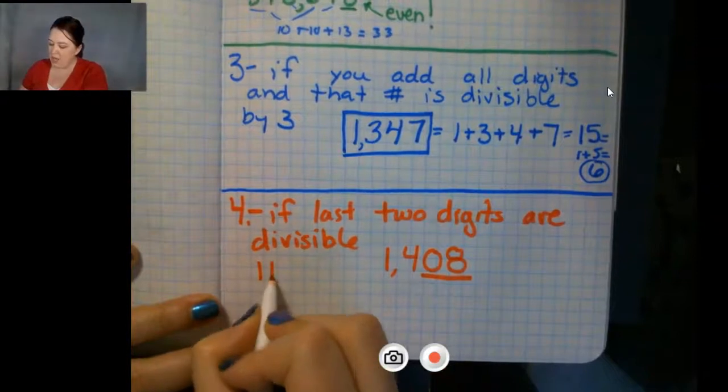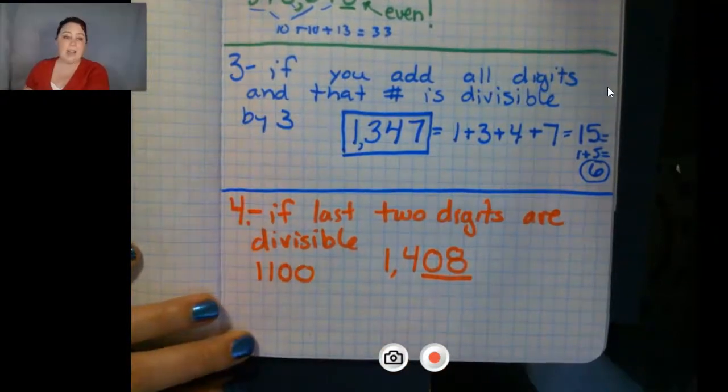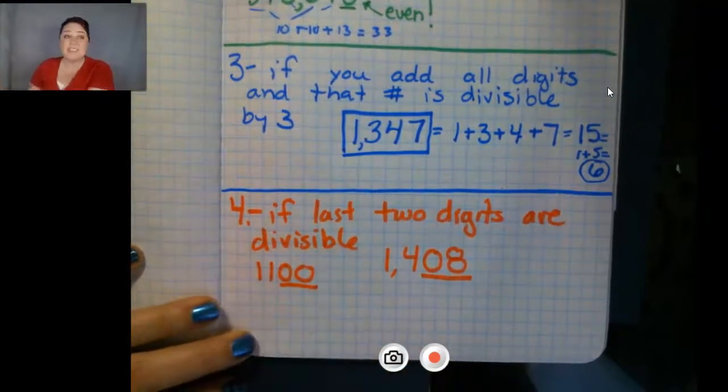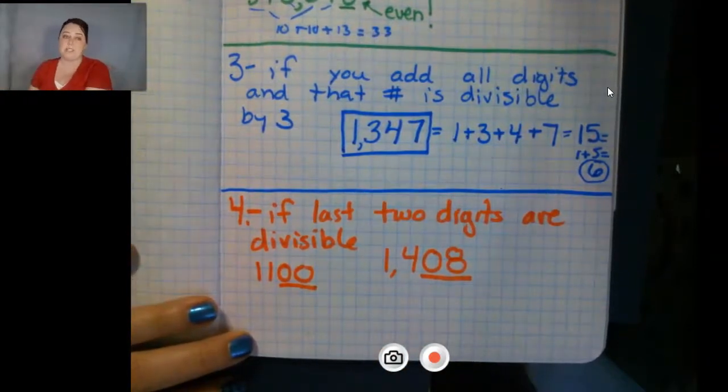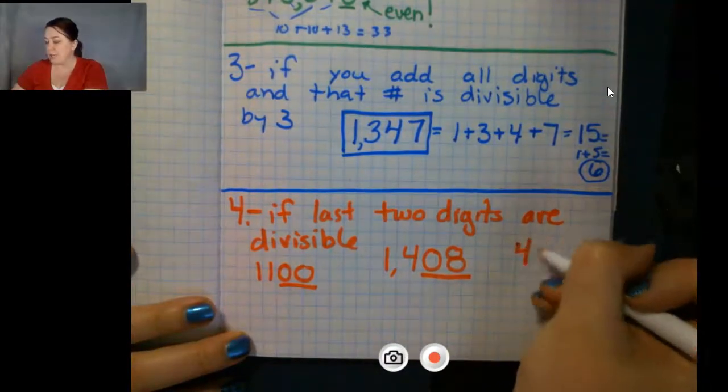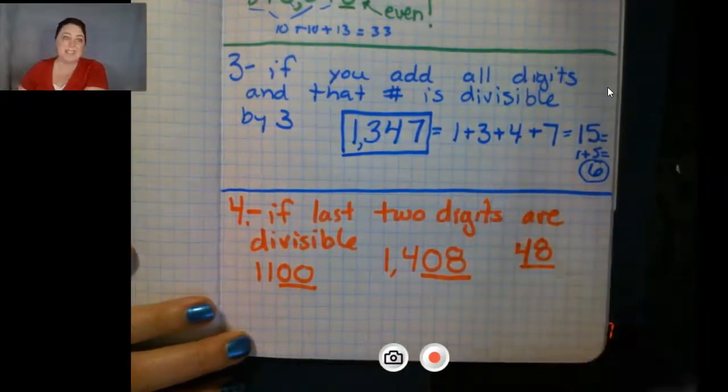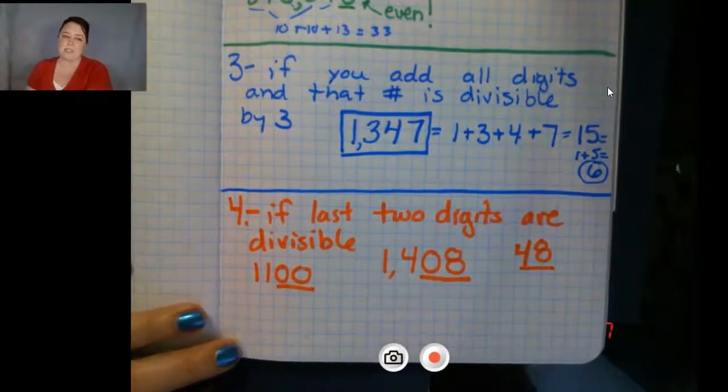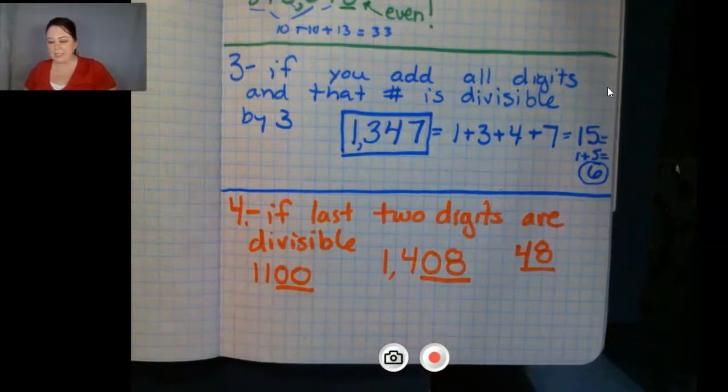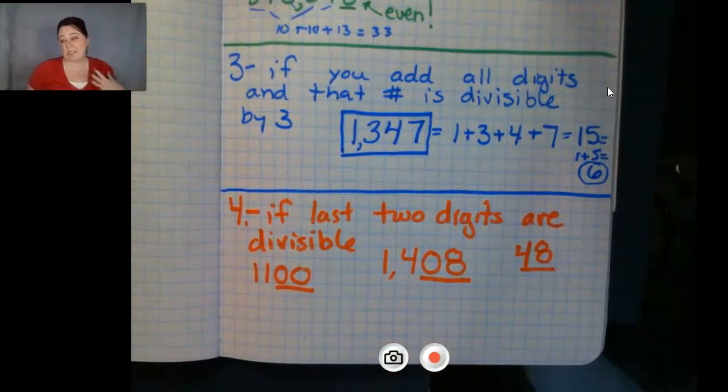If I had 1,100, zero is divisible by four. So that whole number is divisible by four. If I had 48, well, 48 is divisible by four. So that whole number is divisible by four. It's not as nice as when you add them all up. But if you can look at the last two digits and that number is divisible by four, then the whole number is.